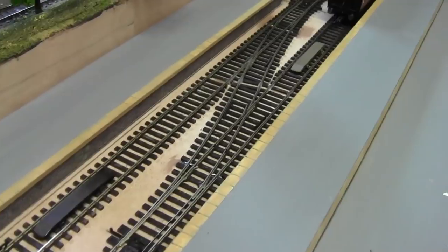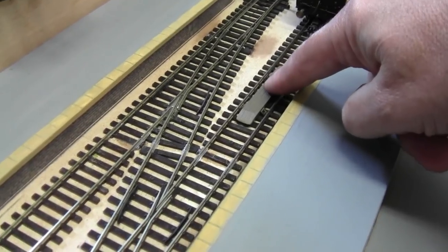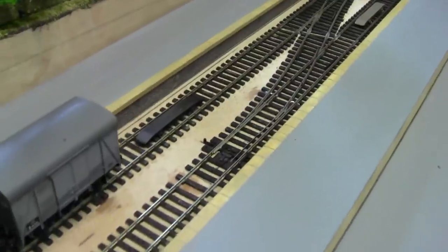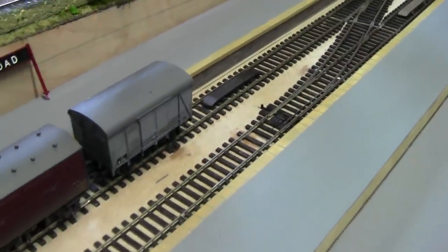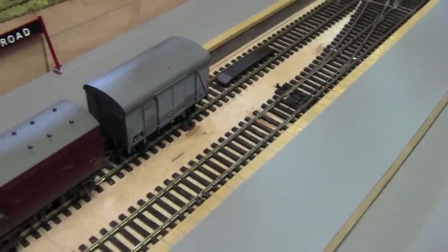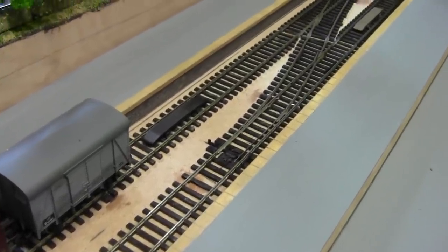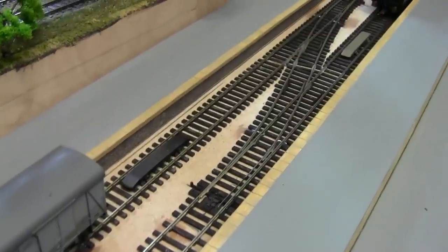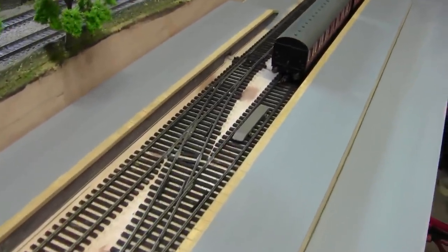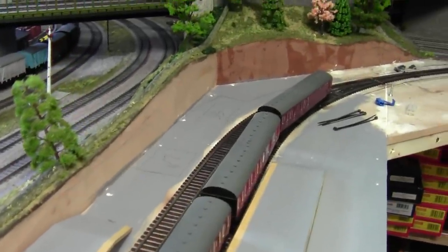As you can see, I've been adding some uncoupling ramps. Now these are Peco, because I'm quite a long way away from the control panel at this end of the layout. So I need some sort of uncouplers at the station. I mean I'll not be doing that much shunting, but it's just so that the loco can uncouple, run around the three coach, and then couple back up again.